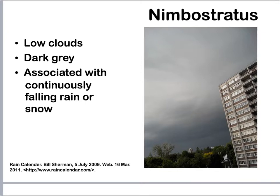Next up we have nimbostratus clouds. These are stratus clouds that are going to produce some kind of precipitation, typically rain or snow. Since they're producing rain, they're going to be darker — this is your all-day rainy kind of day.